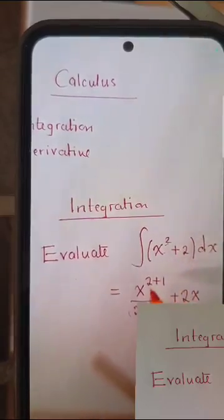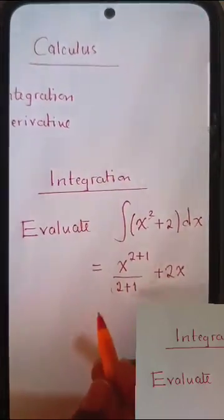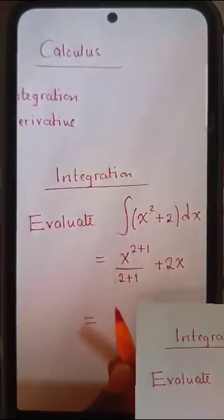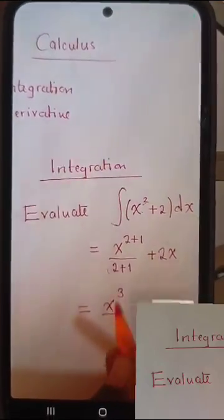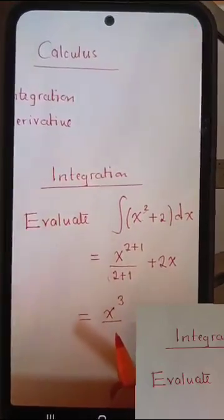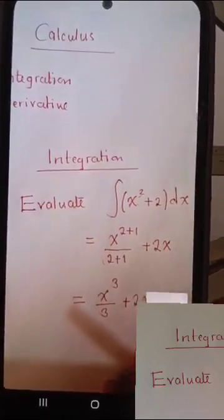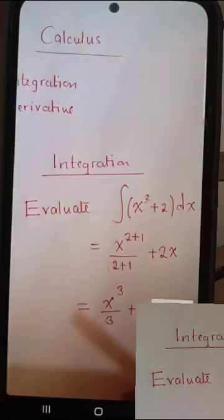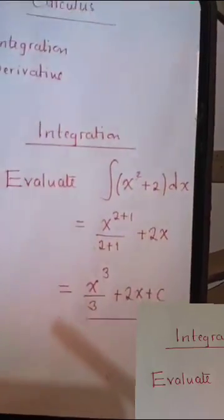But for the numbers with letters, you follow the power, add the 1 to the power, and then divide. So here we are going to simplify like this. So it will be X power 3 over what? 3. Yeah, over 3. Then you say plus 2X. Lastly, you say plus a C. I will explain more though. For as long as you get this concept.